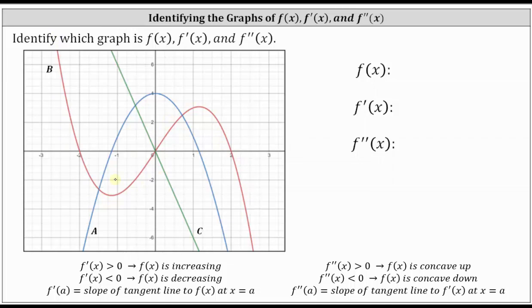Therefore, the original function f of x is going to be the cubic function, or function b. Let's verify this by first determining where f of x or function b is increasing and decreasing. Starting on the left, function b is decreasing until we reach the relative minimum, then the function increases until the relative maximum, and then on the right the function begins to decrease again.